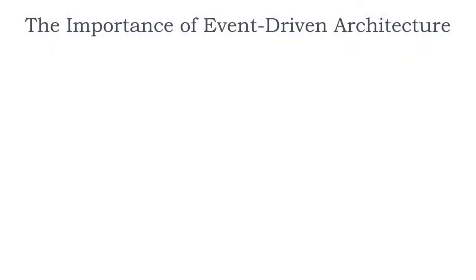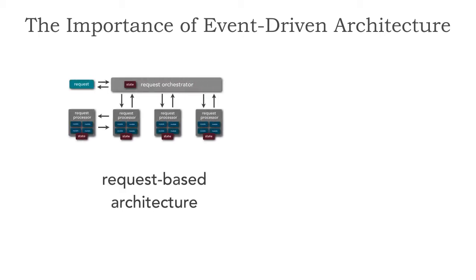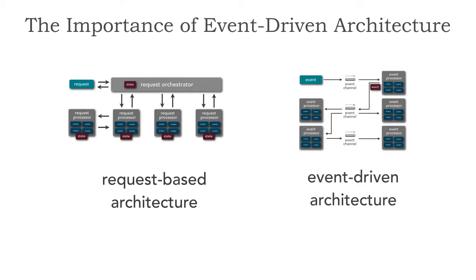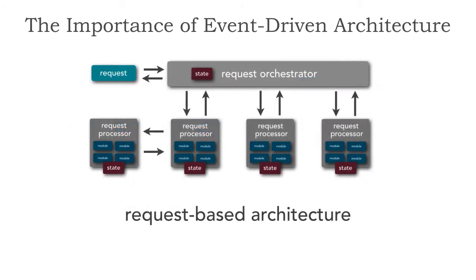When we take a look at the overall models that we have to architect a solution, it boils down to two. There's a request-based approach and also an event-driven approach. With request-based architecture, what we have are synchronous processes, usually orchestrated, where some sort of request comes into a request orchestrator. Notice that state is stored everywhere here. That request orchestrator could even be the actual user interface that then makes requests to different request processors — these could be different services or different components, which could also call other components or processors. The point is that state is stored everywhere as we traverse through to satisfy that particular request.